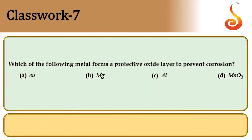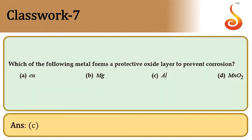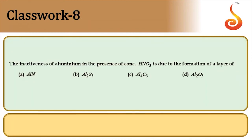Which metal forms a protective oxide layer to prevent corrosion? Aluminium forms alumina (Al₂O₃), a protective oxide layer; initially it reacts, but further reaction does not take place. Answer is option C.